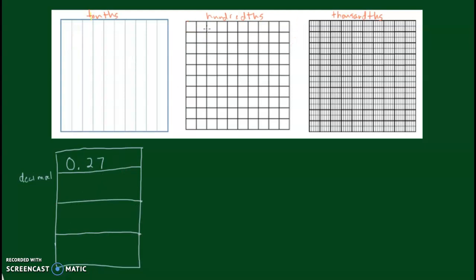For a decimal, I'm going to start by shading in, roughly shading in, twenty-seven hundredths. So that's twenty hundredths. And that gives me twenty-seven hundredths.